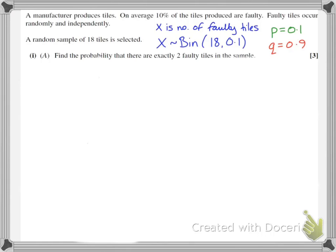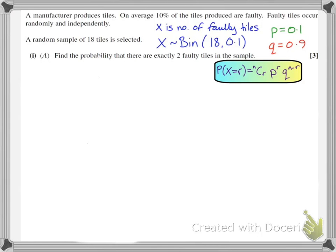I need to find the probability that there are exactly two faulty tiles in the sample. When the probability I'm looking for is an exact value like this, I can use the formula — not given in the formula book, so I need to make sure I've learnt this one. The probability that x equals a particular value r is nCr × p^r × q^(n−r). So I'm looking for P(X=2): my nCr value is 18C2, my p^r is 0.1², and my q^(n−r) is 0.9^16.